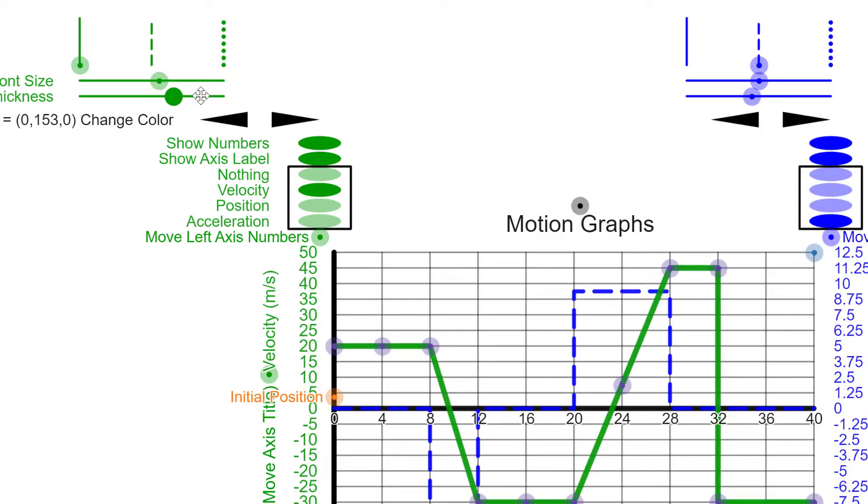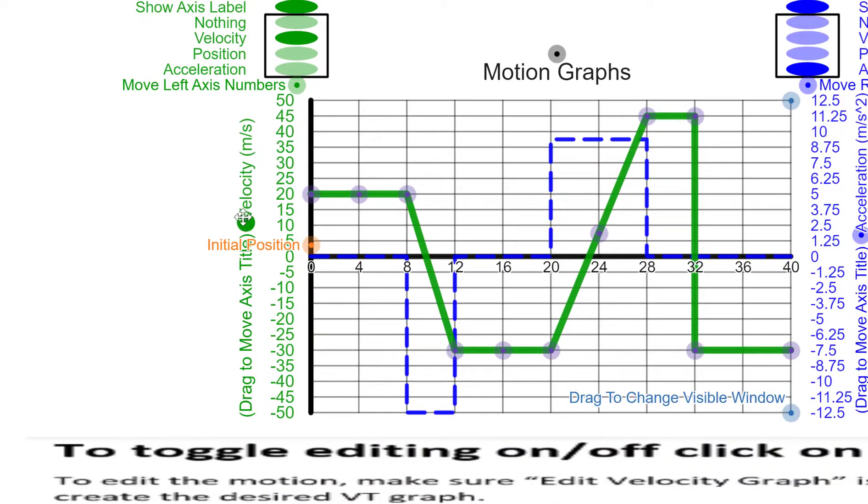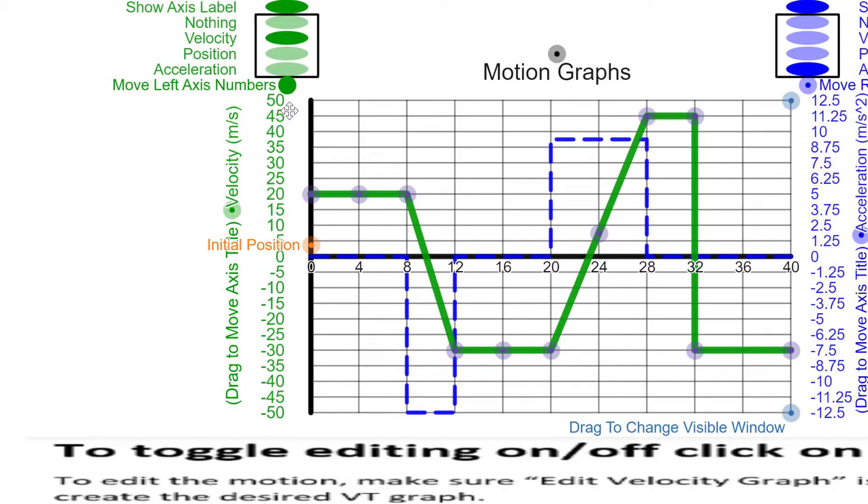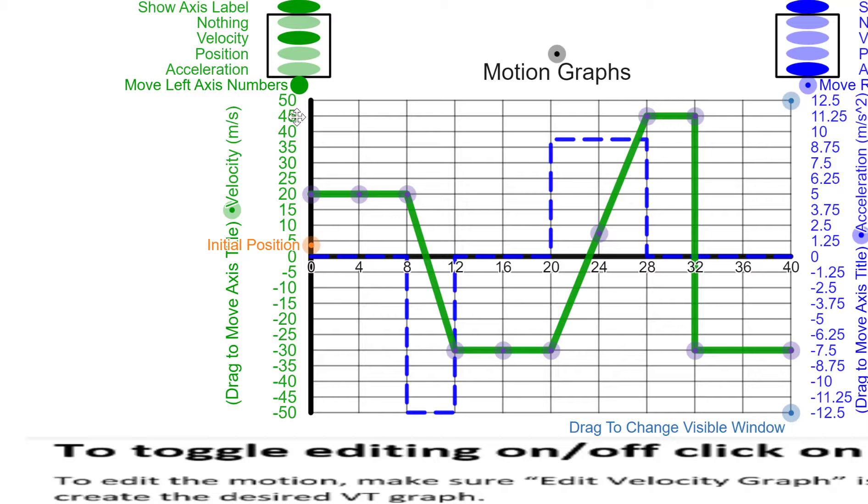You can change the line thickness of the lines. You can move the axes titles around. You can move the axes themselves left to right, the labels.